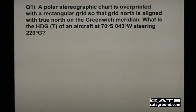For example, a polar stereographic chart is overprinted with a rectangular grid so that Grid North is aligned with True North on the Greenwich Meridian. What is the heading True of an aircraft at 70 degrees South, 043 degrees West, steering 220 degrees grid?